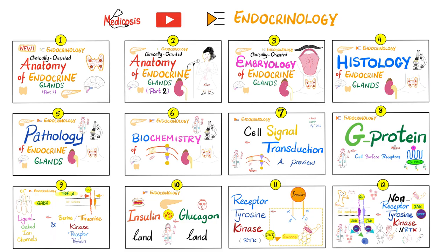Please watch these videos in order. Today we will review the G-proteins, the ligand-gated ion channels, serine and threonine kinase receptor proteins, and insulin versus glucagon. How does glucagon work? G-protein coupled — specifically G-S. And insulin works via the receptor tyrosine kinase. Receptor tyrosine kinase versus non-receptor tyrosine kinase, also known as the JAK-STAT pathway.